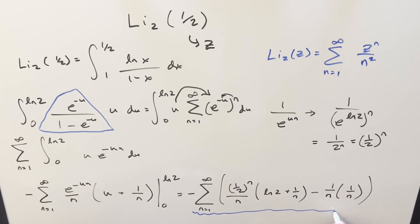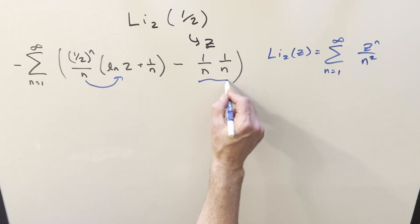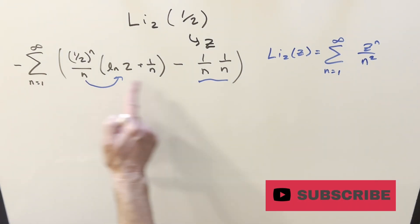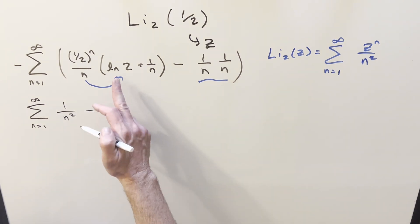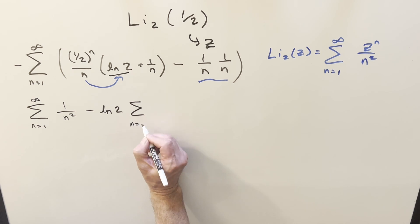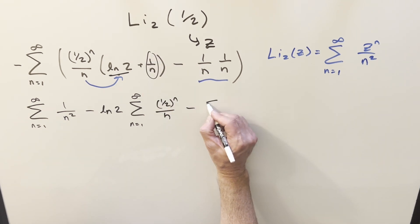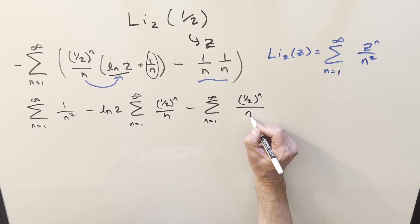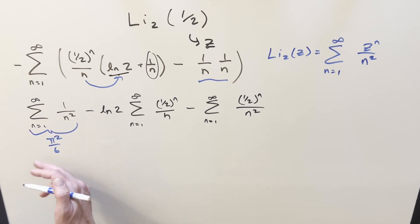Let's clean up the board and simplify. Distributing everything out, we get three separate sums. Accounting for signs (minus times minus is plus), reordering: the first sum is from n=1 to infinity of 1/n², which is the Basel problem — this equals π²/6, also written as the Riemann zeta function of 2. The second sum has ln 2 factored out (it's a constant) times the sum from 1 to infinity of (1/2)^n / n. The third sum is minus the sum from 1 to infinity of (1/2)^n / n².